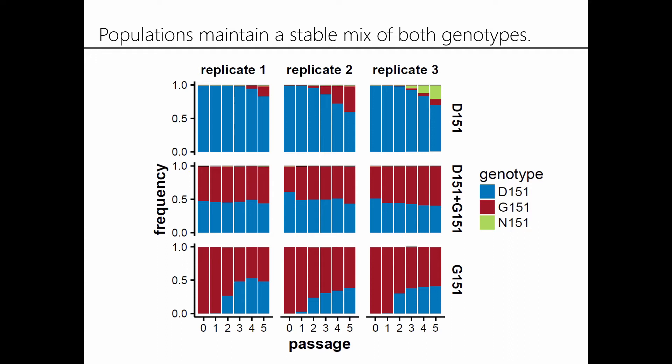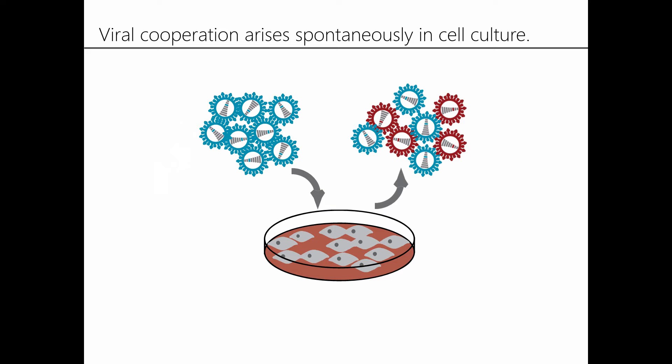We've done work trying to identify the molecular mechanism of cooperation, which I'll skip over here for the sake of time. The key point I want to emphasize is that almost without looking, we've identified this instance of viral cooperation that seems to have arisen spontaneously and repeatedly in hundreds of samples in labs all across the world. I think this is just one cool example of how deep sequencing can uncover really interesting evolutionary dynamics.